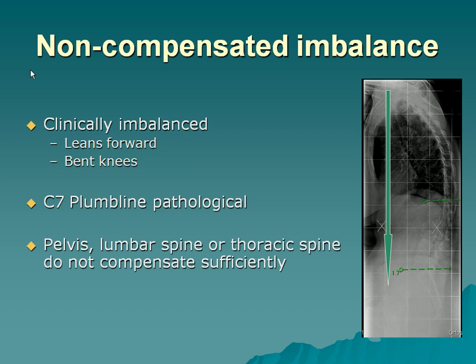What I've tried to do in this talk is to plant something in your brain: even if patients look balanced, there is a cost for this balance. They compensate through multiple mechanisms. If you can cure them from the need to compensate, they will have a good outcome. That's why C7 plumb line studies may not show improvement even when you've normalized spinopelvic alignment — the patient no longer needs to compensate. Thank you.